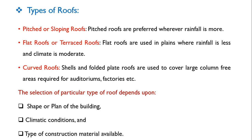Flat roofs or terrace roofs are used in places where rainfall is less and climate is more moderate — terrace means access is provided to walk on it. Covered roofs — shell and folded plate roofs — are used to cover large column-free areas required for auditoriums, factories, and similar spaces. Supporting columns are provided only at the edges, so ample unobstructed space is available in between. So covered roofs are used in auditoriums, factories, and community halls.